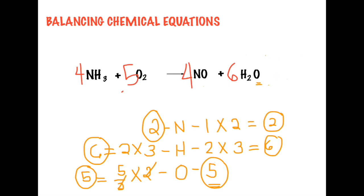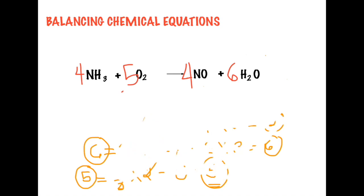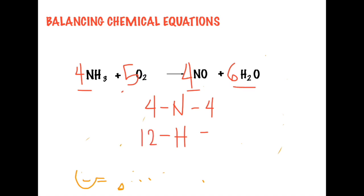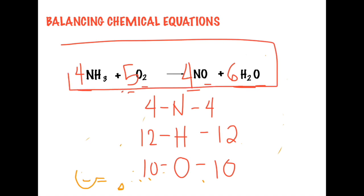Let's check whether everything is now balanced. Starting with nitrogen: we have four on the reactant side and four on the product side. Followed by hydrogen: 4 × 3 = 12 on the reactant, and 6 × 2 = 12 on the product. And finally oxygen: 5 × 2 = 10 on the reactant, and 4 + 6 = 10 on the product. Therefore, this chemical equation is now balanced.